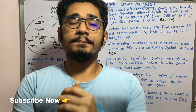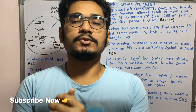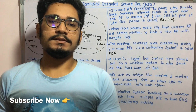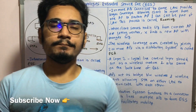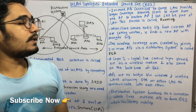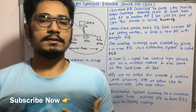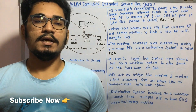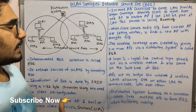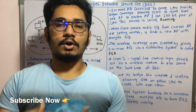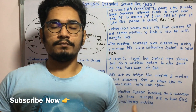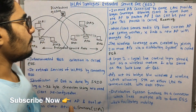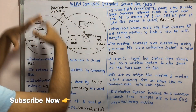Welcome back. In the previous video we saw what BSS, the basic service set, is — a WLAN topology. In today's video let's see what an extended service set is, which is the second type of topology seen in WLANs. It is formed when you collaborate or combine multiple BSSs together to form an extended service set.